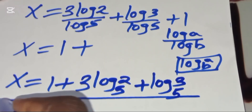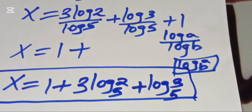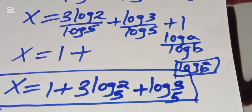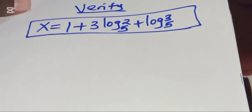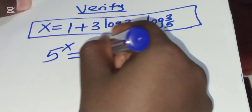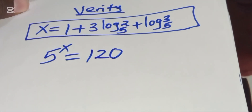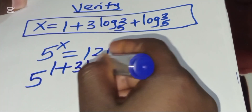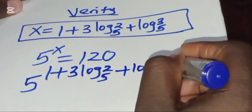Now let's verify that this value of x actually satisfies the equation. We need to confirm that 5 to the power (1 + 3·log₅(2) + log₅(3)) equals 120.